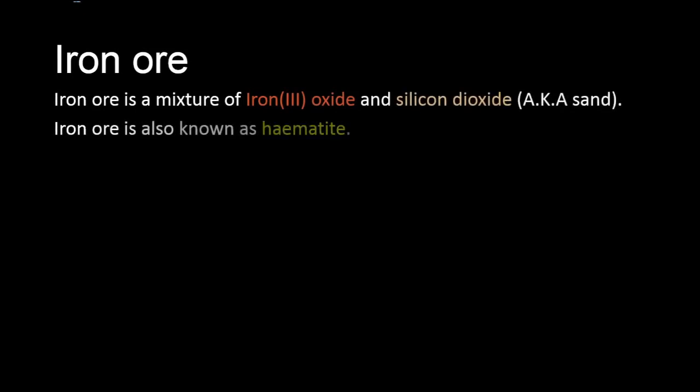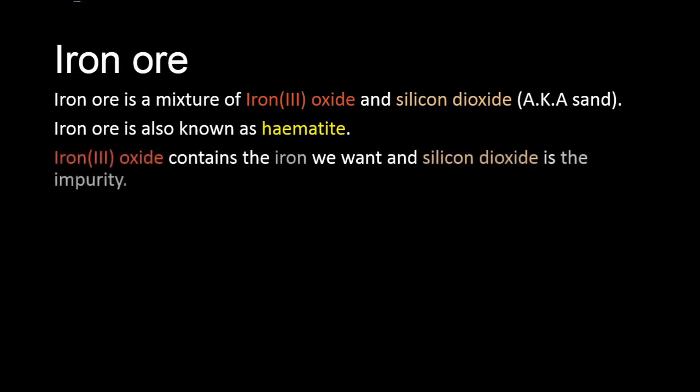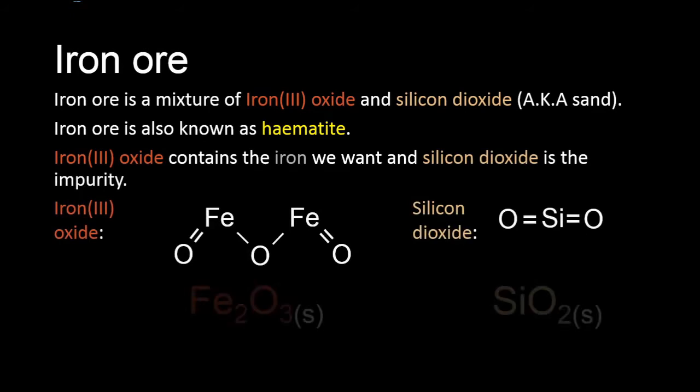Iron ore is a mixture of iron 3 oxide and silicon dioxide, also known as sand. Iron ore is also known as hematite. Iron 3 oxide contains the iron and silicon dioxide is the impurity. Here's how they look like.